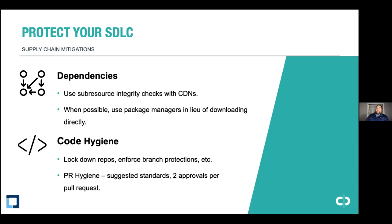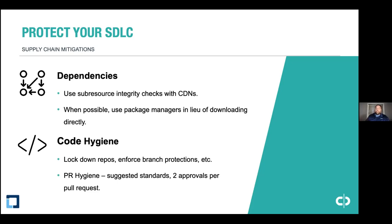Code hygiene is also very important — that could be a talk in itself. The main points are: lock down your repos, enforce branch protections, role-based access control on who can commit and who has admin rights. Have pull request hygiene — for example, requiring two approvals per pull request. As a security practitioner, create well-defined standards that your developers can adhere to, because you're working together to protect your company — developers want to produce secure, high-quality code.